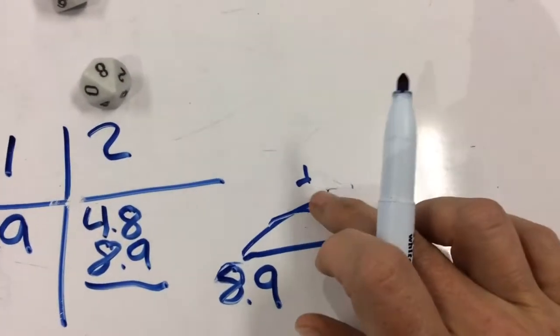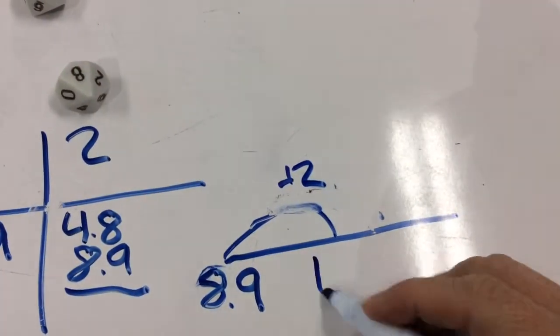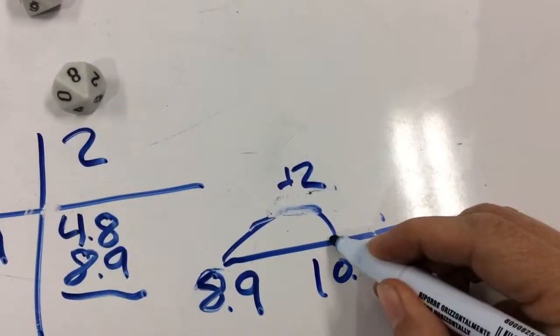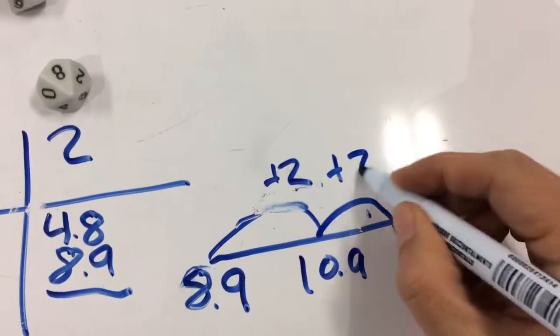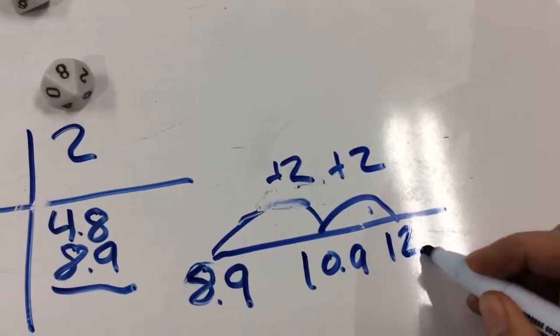And sometimes the kids might need to split that into two and two for some students to break it down. So plus 2 is 10.9, and then plus two more is 12.9.